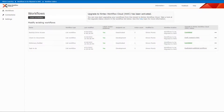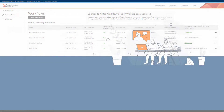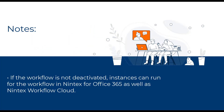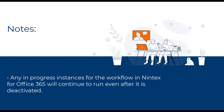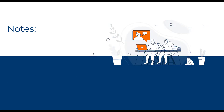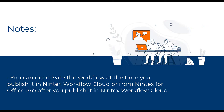Switching back to SharePoint Online, we can see that our workflow now has the upgrade status of Completed and our upgrade is complete. If the workflow is not deactivated, instances can run for the workflow in Nintex for Office 365 as well. To avoid having the workflow started and running in both Nintex for Office 365 and Nintex Workflow Cloud, you must deactivate the workflow in Nintex for Office 365. Any in-progress instances will continue to run even after it is deactivated. You can deactivate the workflow at the time you publish it in Nintex Workflow Cloud, or from Nintex for Office 365 after you publish it.